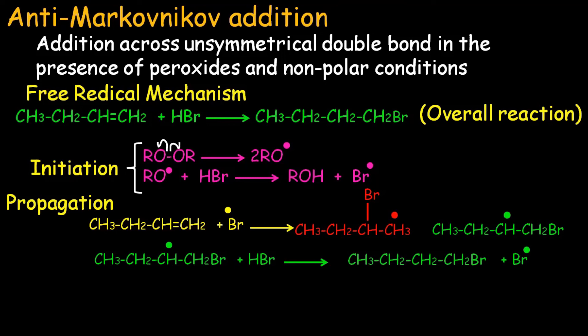In a nutshell, Markovnikov addition and anti-Markovnikov addition differ in their attacking reagents and reaction conditions. Under polar conditions with polar reagents, Markovnikov addition proceeds. Anti-Markovnikov addition proceeds when the reagent is a peroxide and the reaction is maintained under non-polar conditions or THF is used as a solvent. This was all about the difference between Markovnikov and anti-Markovnikov addition.